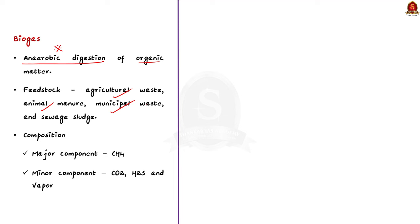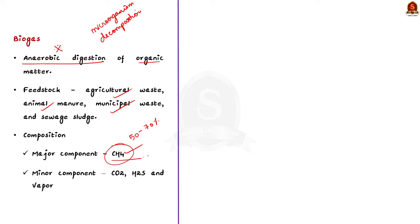To put it simply, biogas is produced when microorganisms decompose organic matter. Biogas is a mixture of many gases like methane and carbon dioxide. Note that methane is the primary component of biogas — comprising 50% to 70% of it — and is responsible for the energy value of biogas. Gases like carbon dioxide, hydrogen sulfide, and water vapor are also present in biogas.